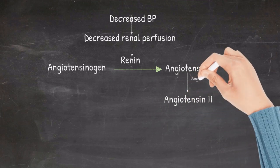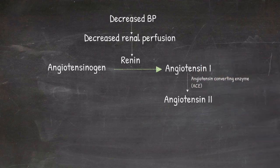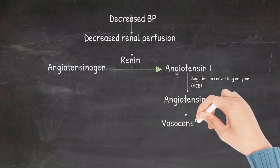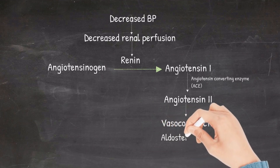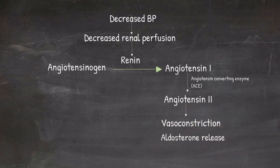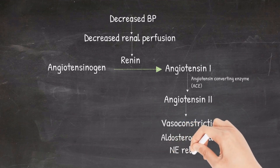Angiotensin 1 is in turn converted to angiotensin 2 with the help of the enzyme angiotensin converting enzyme. Angiotensin 2 is a powerful vasoconstrictor. Apart from that, this also stimulates the release of aldosterone, which causes salt and water retention and also the release of norepinephrine.